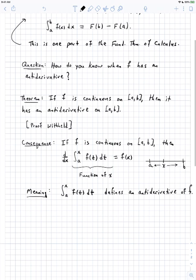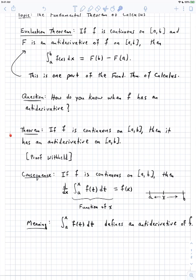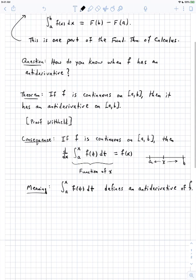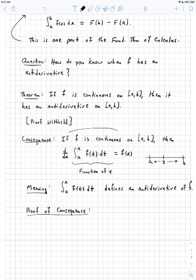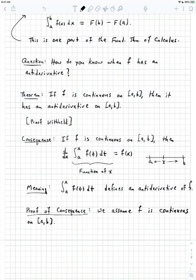Let's prove this theorem. We're going to need to use the previous theorem — the one where the proof was withheld because it was too difficult — but we're going to use it to prove the consequence. Proof of consequence. We want to show that if we differentiate this integral, we get little f. The key idea is that we're assuming f is continuous. We assume f is continuous on the interval from a to b. So according to our theorem, the one which we did not prove, since f is continuous on [a, b], it has an antiderivative.